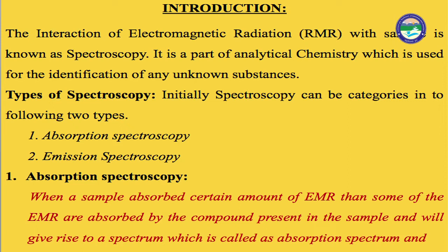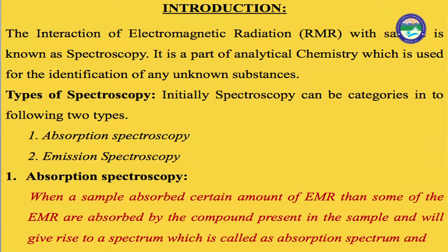The basic requirement for spectroscopy is electromagnetic radiation. This special type of radiation is introduced on a sample. As the radiation interacts with the sample, it gives peaks. When we identify those peaks using different techniques — some compounds give peaks in UV, some in IR, some in NMR — each spectroscopy has its own different function. Finally, interaction of electromagnetic radiation with matter is known as spectroscopy.